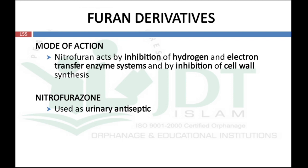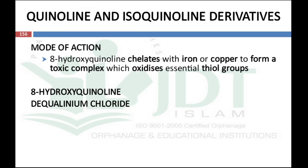The next group is furan derivatives. The example is nitrofurazone. Its mechanism of action is by inhibition of hydrogen and electron transfer systems and also by inhibition of cell wall synthesis. Nitrofurazone is used as a urinary antiseptic.